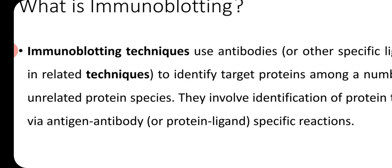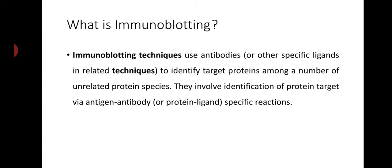Immunoblotting techniques utilize antibodies, or if you are not using an immunotechnique, certain other specific ligands are used. Immunoblot specifically refers to using antibodies. The technique is trying to identify target proteins in a mixture of unrelated proteins, because there is a mixture of proteins in any biological sample. If you are targeting a specific protein, you use this technique — it is just like finding a needle in a haystack. Identification of protein via antigen-antibody specific reactions is what is called immunoblotting.